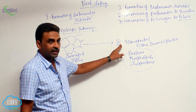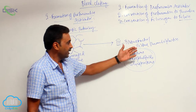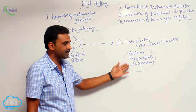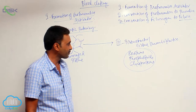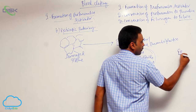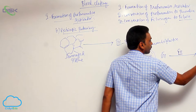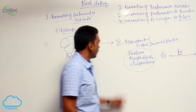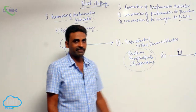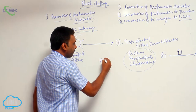Factor III, called tissue factor or tissue thromboplastin, includes three things: proteins, phospholipids, and glycoproteins. On release, Factor III will activate Factor VII.